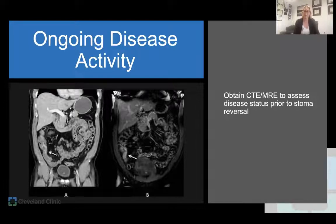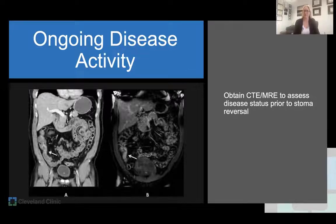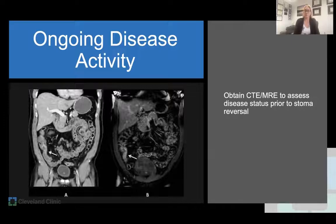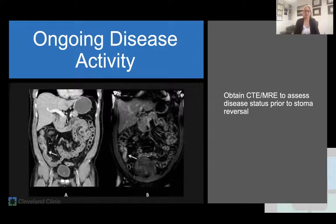Specific to Crohn's disease, you want to think about whether there is any ongoing disease activity, both proximally and distally. When assessing ongoing disease activity proximally, we typically obtain enterography — either CT enterography or MR enterography. This is important because we want to understand if there is additional surgery needed. A patient may have obstructive-like symptoms mistaken for a hernia at the stoma site, when there may actually be upstream stenosis. So we need to understand the disease activity in the intestine proximal to the stoma, and that may need to be addressed at the time of stoma reversal.